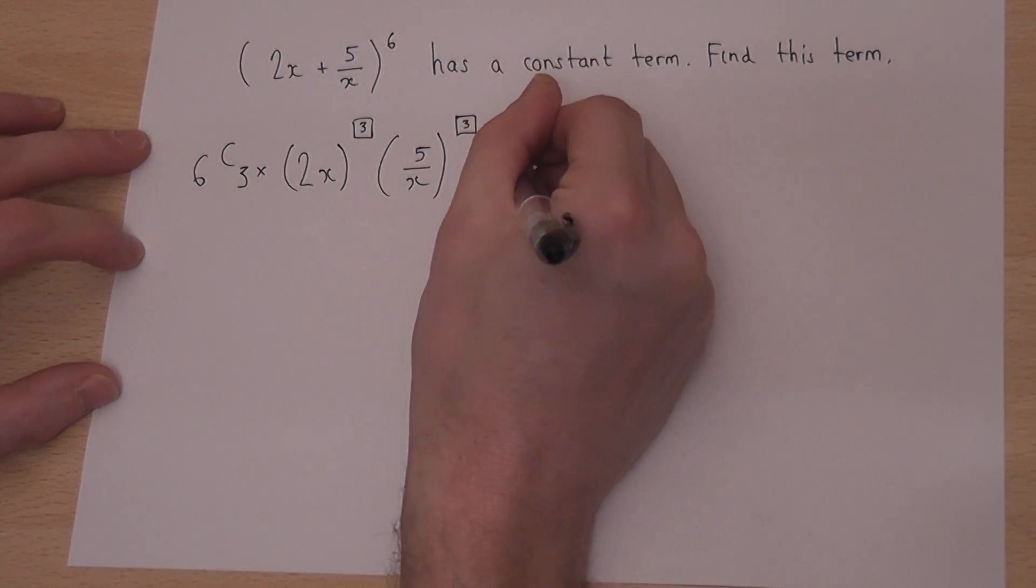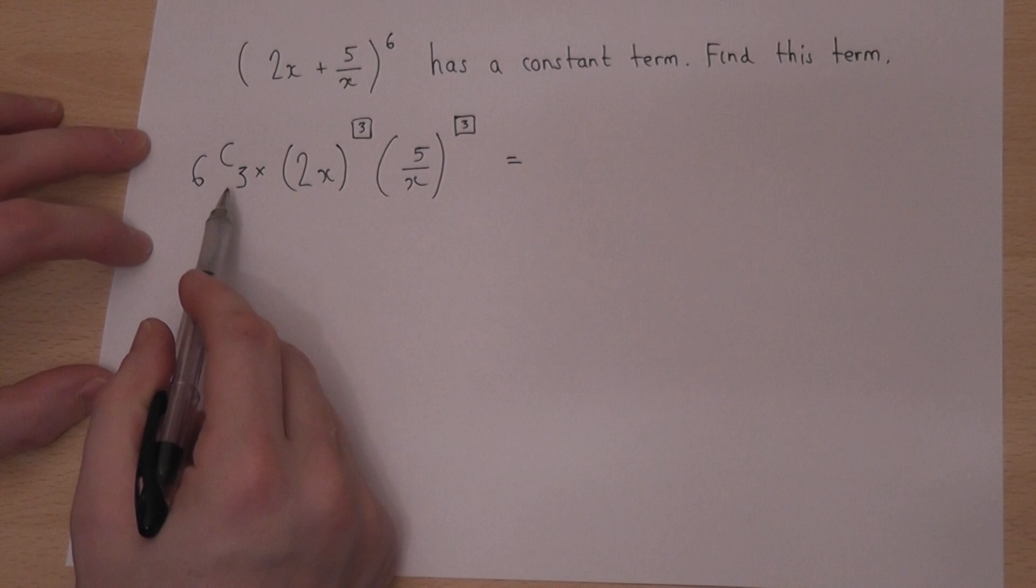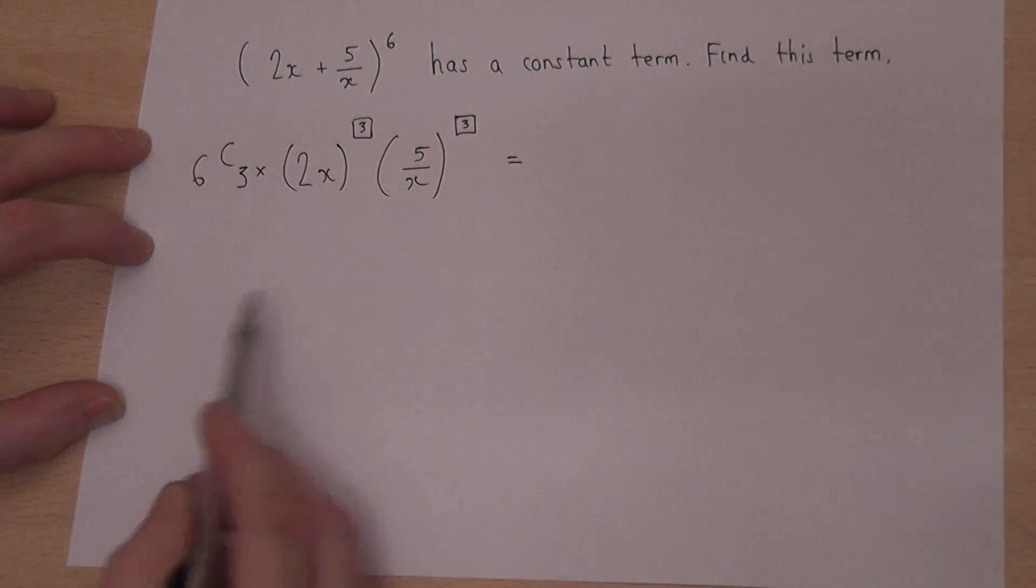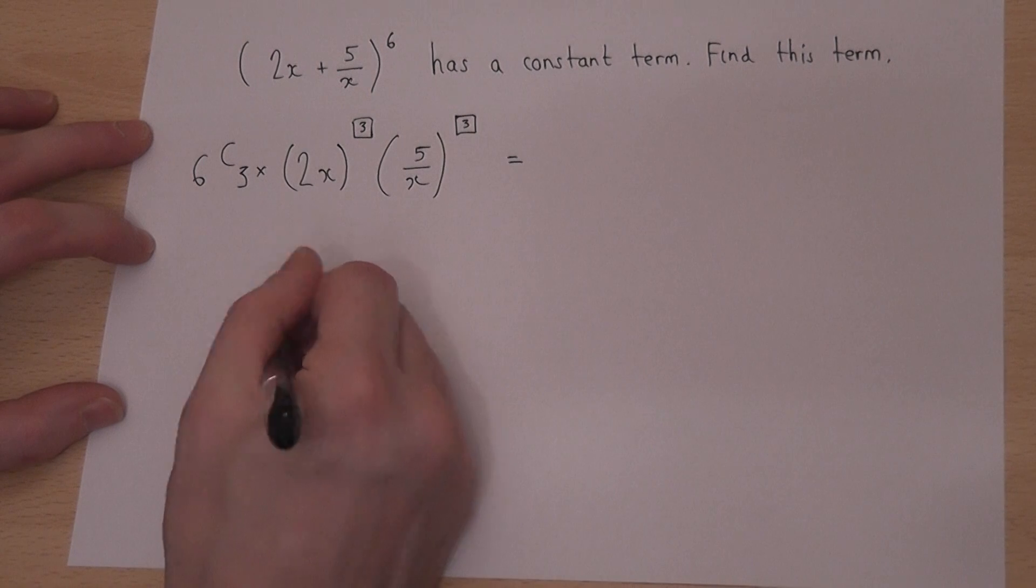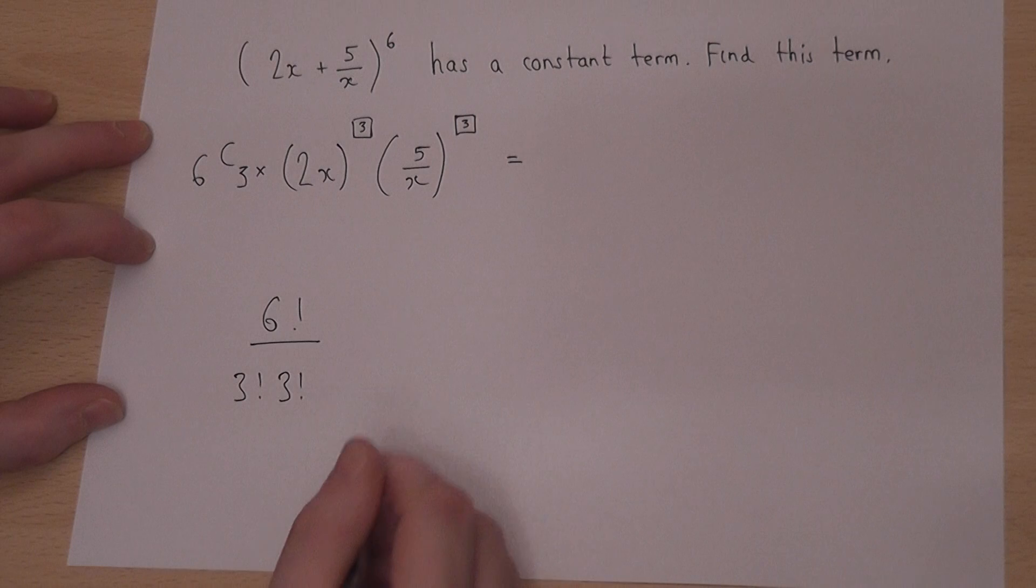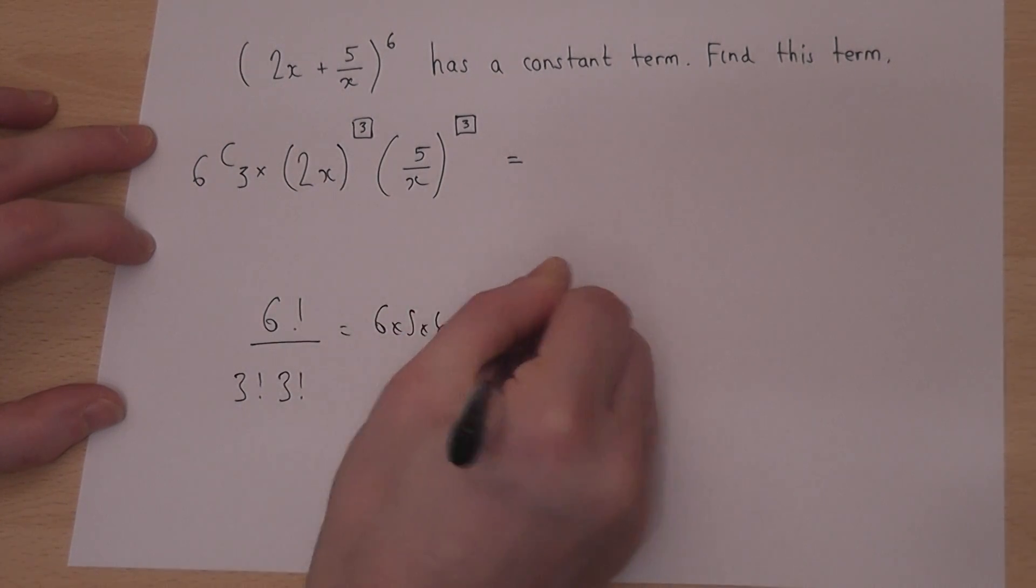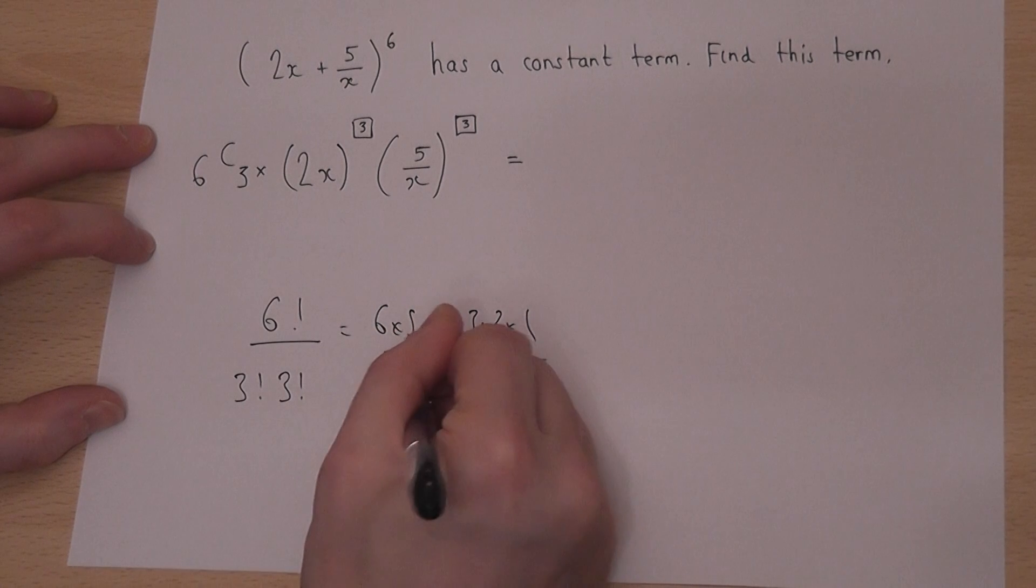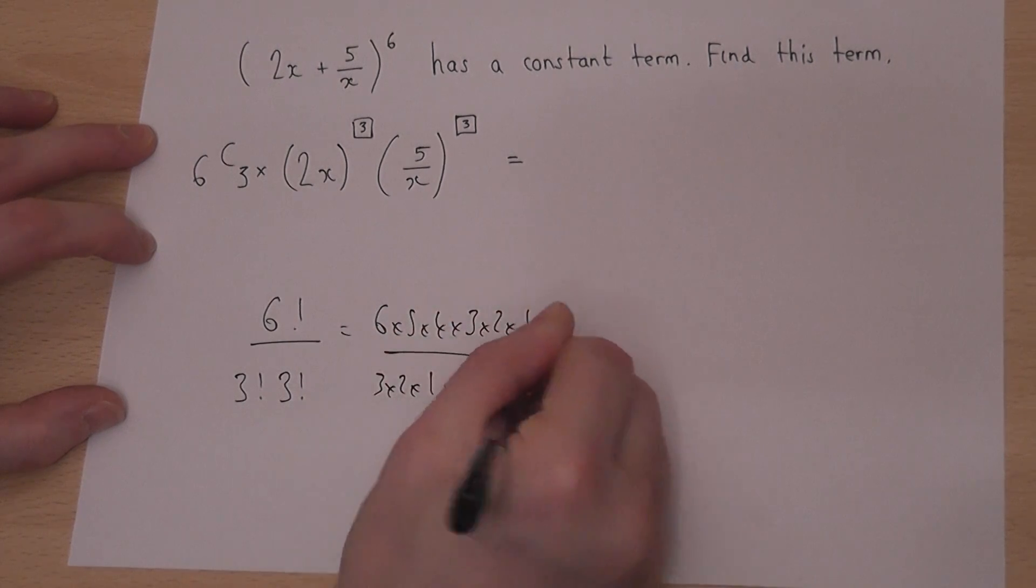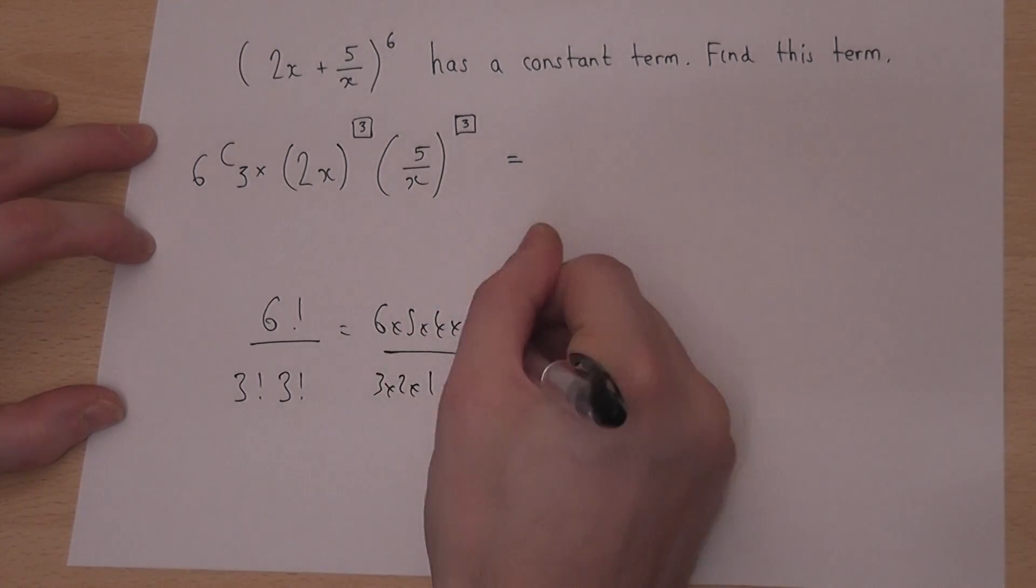So 6C3. We could draw out Pascal's triangle or we could use factorials. So 6C3 is 6 factorial over 3 factorial 3 factorial, which is 6 times 5 times 4 times 3 times 2 times 1 over 3 times 2 times 1 times 3 times 2 times 1. So a lot of the stuff cancels off.